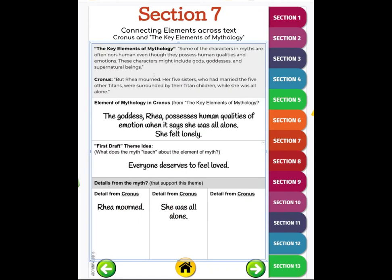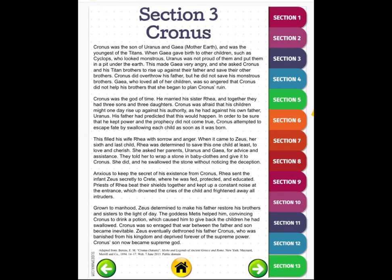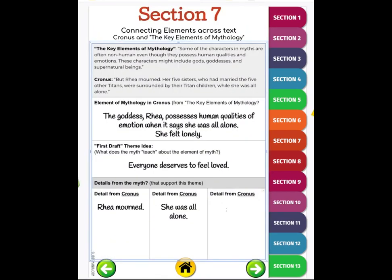If I click down in this area where it says details from Cronus, it's going to take me back to page nine, that's the mythology Cronus. I also remembered after she had her sixth and last child Zeus, she was determined to save this one last child to love and cherish. That motherly love came through. I'm going to come back to page twenty and paste that information in. That's going to help me figure out maybe what the theme is.